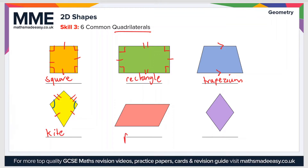Moving on, we have a parallelogram. The main features of a parallelogram are: first, two pairs of parallel sides; second, opposite internal angles are equivalent — the blue angles are equal and so are the red ones; and third, the sum of two adjacent angles is 180 degrees, so the blue angle plus the red angle equals 180 degrees.